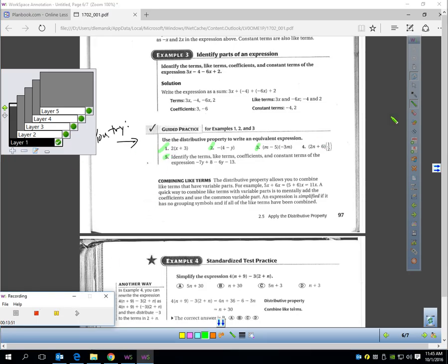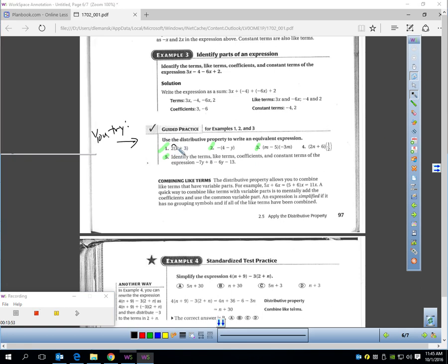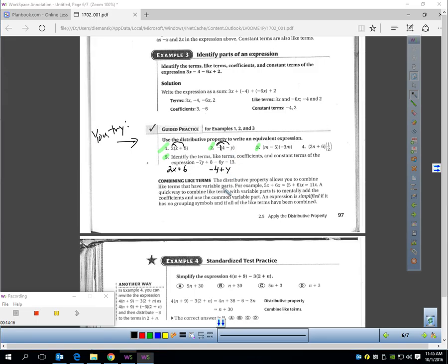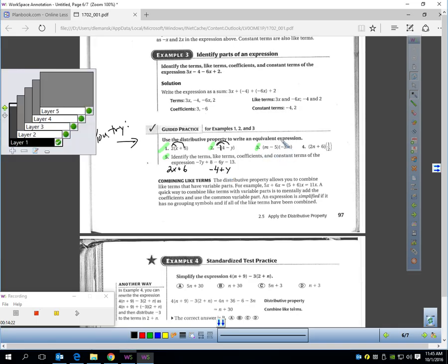So when we do these, 2 times x is 2x. 2 times positive 3 is positive 6. 2x plus 6 is what you'd get when you distribute. Watch out for this one. This is like having a negative 1 in front. Negative 1 times 4 is negative 4. Negative 1 times negative 1y is a positive 1y. Remember, negative times negative is a positive. Let's go over here. Negative 3m times m is negative 3m squared. And negative 3m times negative 5 is positive 15m.